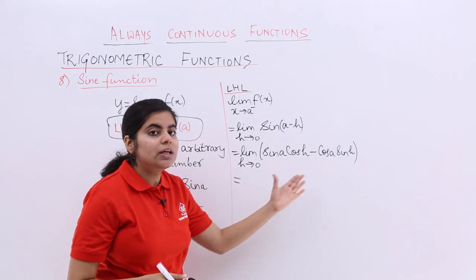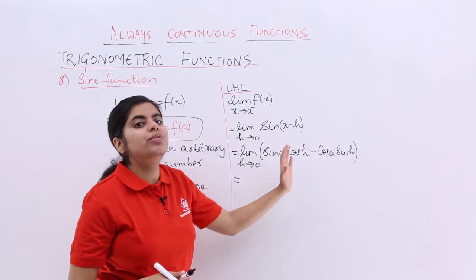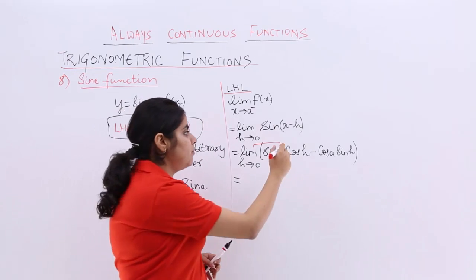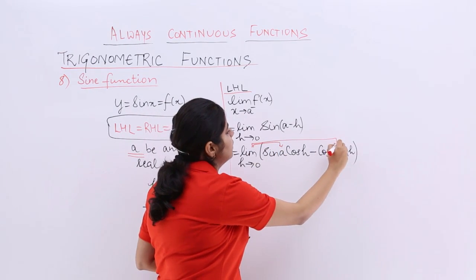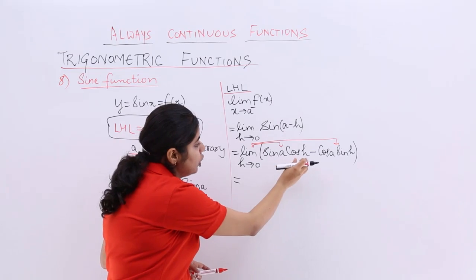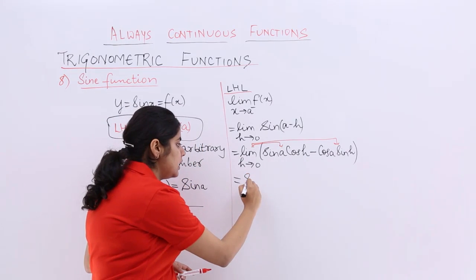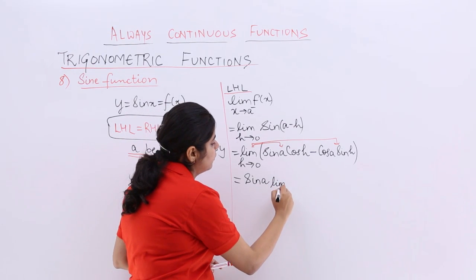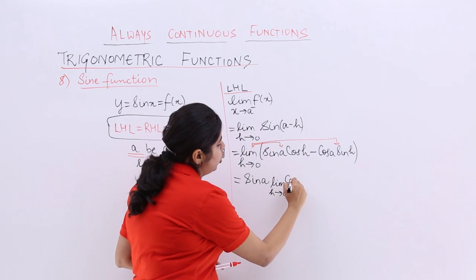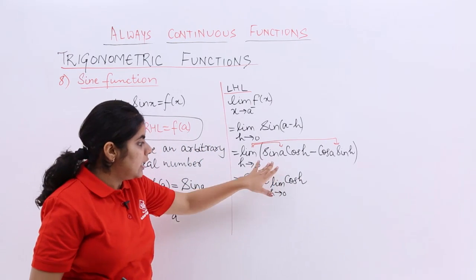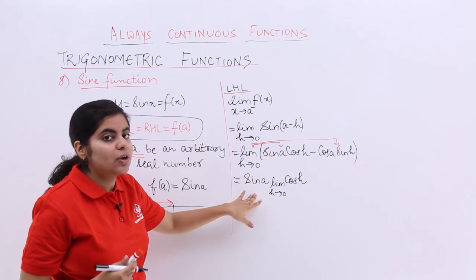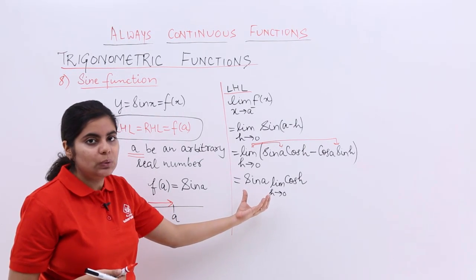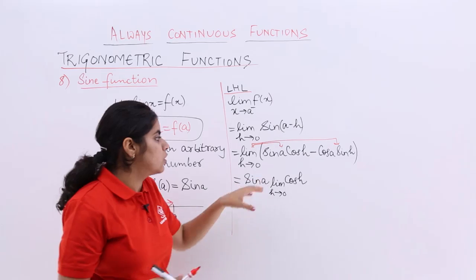Since limit is there, there are two terms. We can always take the limit to both the terms one by one. So firstly limit will go with this, then we have a negative sign and the limit goes with this also. Now sine a cos h - sine a behaves as a constant, comes outside. Then we have limit h tends to 0 cos h. Sine a behaves as a constant, it comes outside because a is an arbitrary number. So a may be anything. Sine of that value is real only, comes outside as a constant. Cos h is here, then the minus sign.